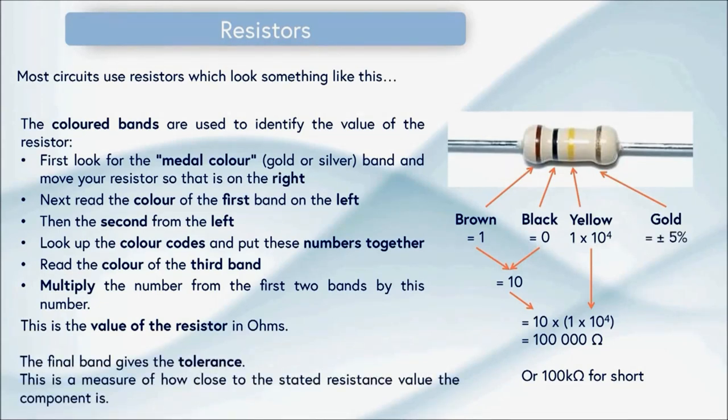If we go back to the metal coloured band, in this case gold, this gives us the value of the tolerance of the resistor and this tells us how close to the manufactured value the actual value is likely to be. So in this case gold is plus or minus five percent accuracy and silver would be a different value.